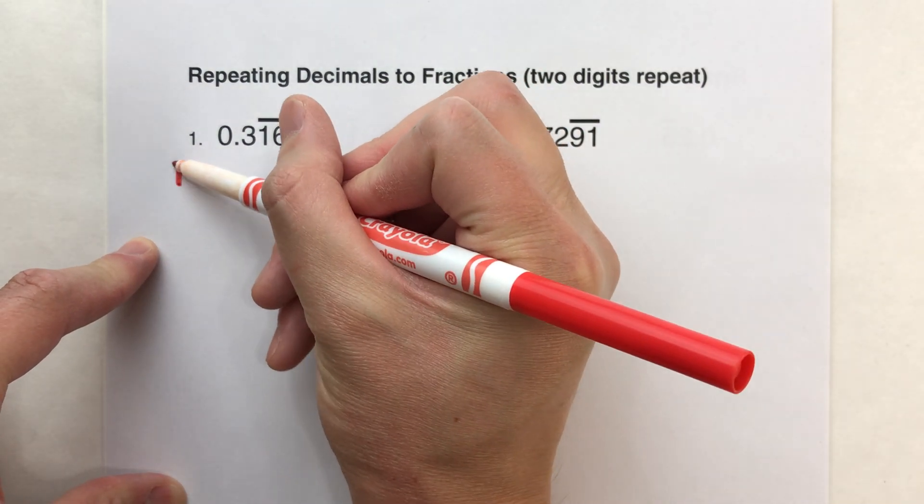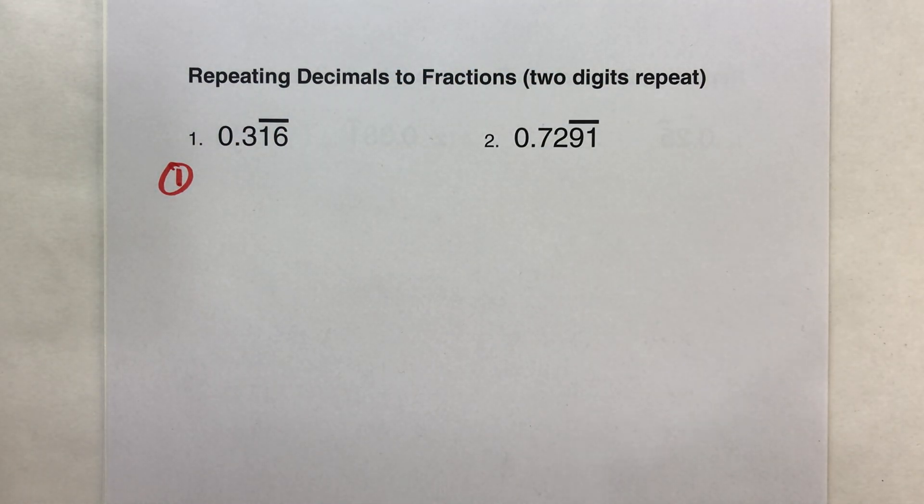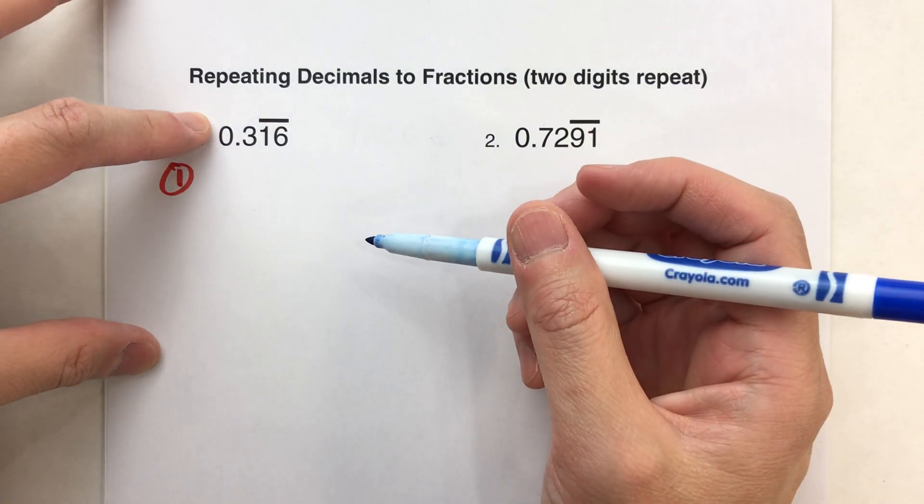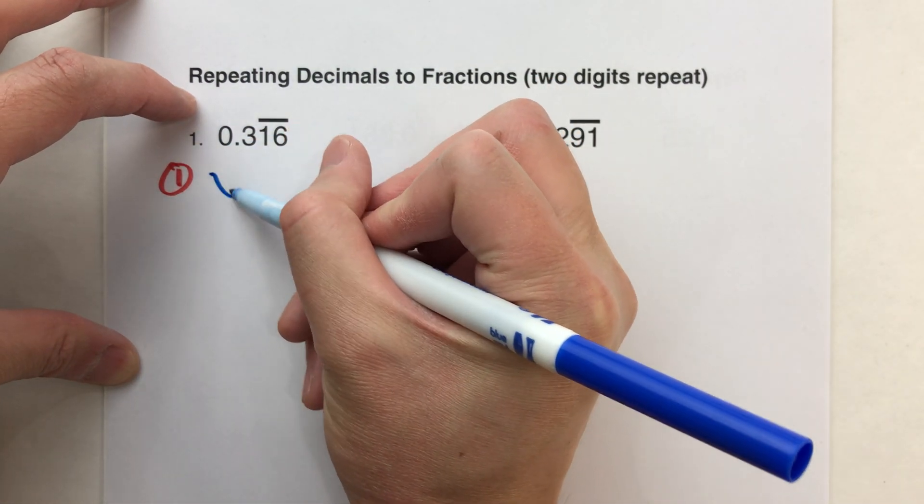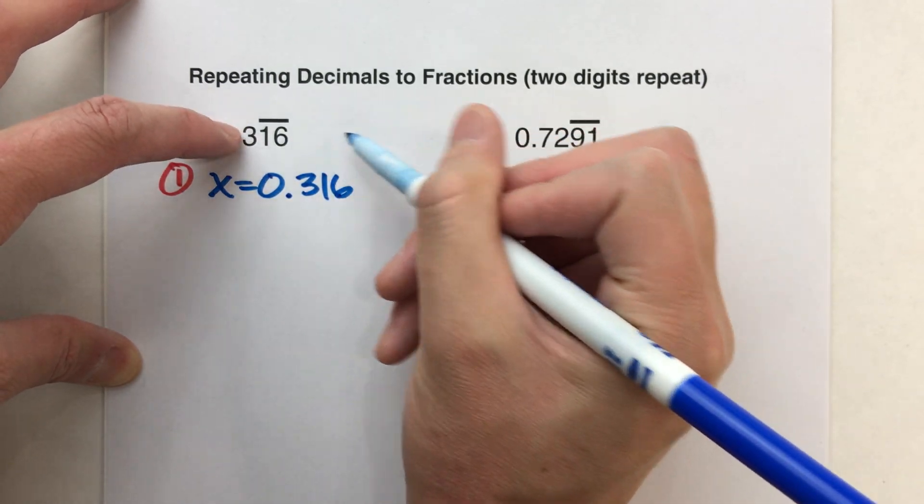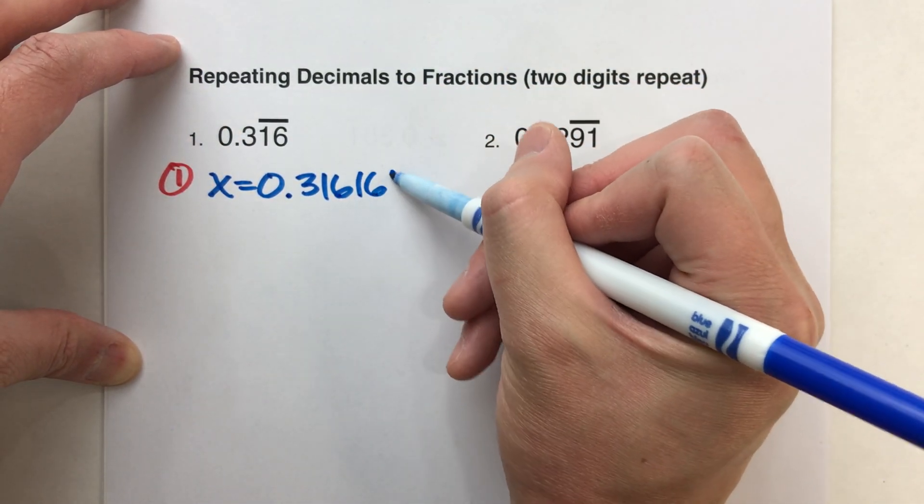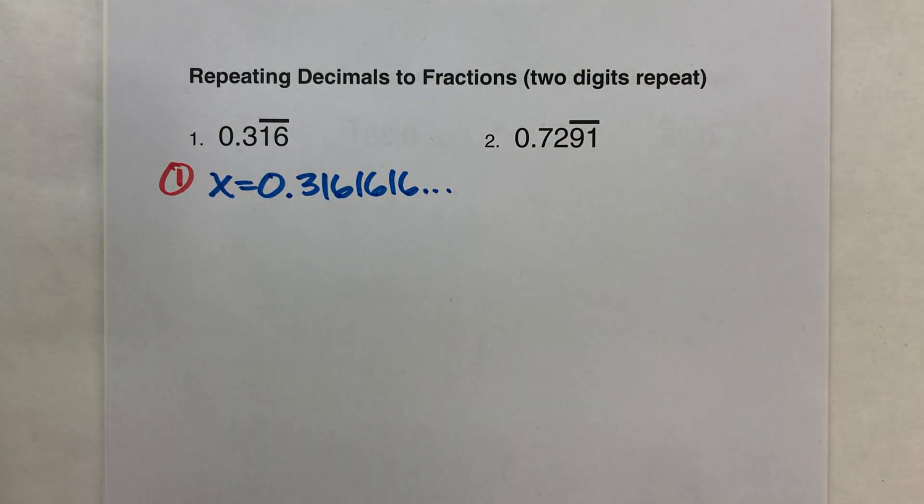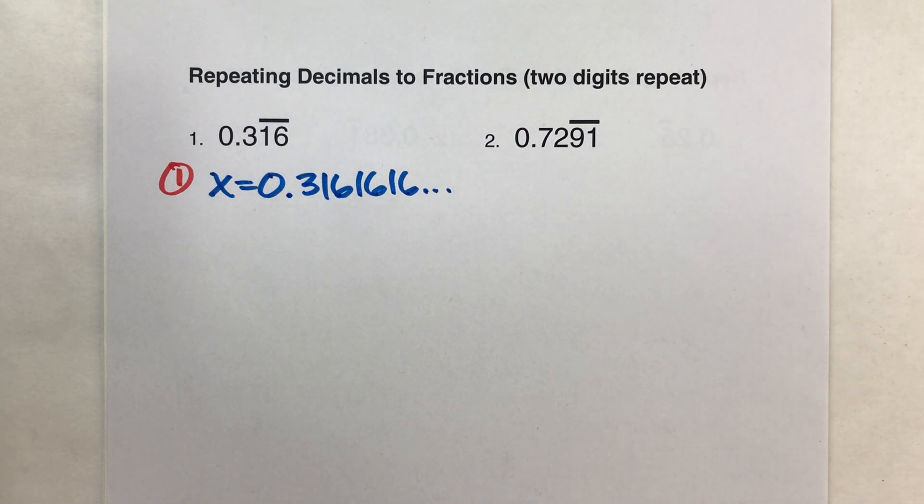Step one. We are going to write an equation using the number we're given. In this case, 0.316 repeating. So I'm going to say x equals 0.316, and since 1-6 repeats, I like to write it out a little bit so I can see some of the digits. 0.316161616.